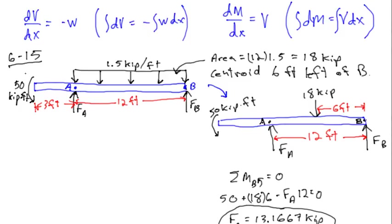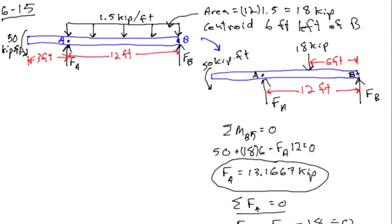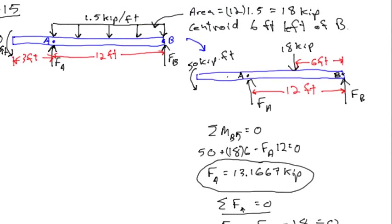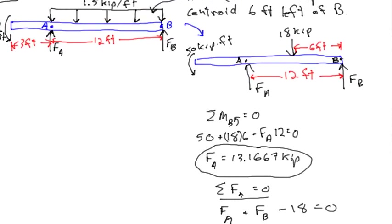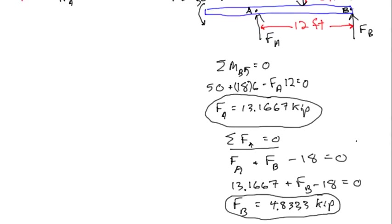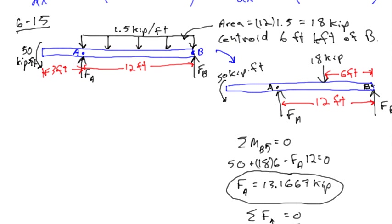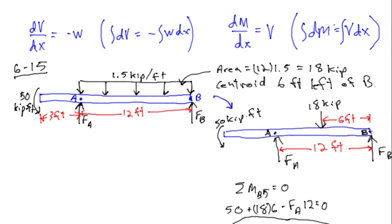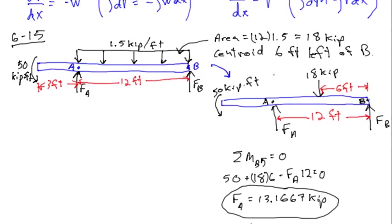Here's the free body diagram for the given configuration, and I've already solved the statics problem. I replaced the distributed load with an effective concentrated load, did the sum of the moments to get F_A, and the sum of the forces to get F_B. So the reaction forces are already done. Now I want to make a graph of V versus X, and the author recommends putting it directly under the original free body diagram.